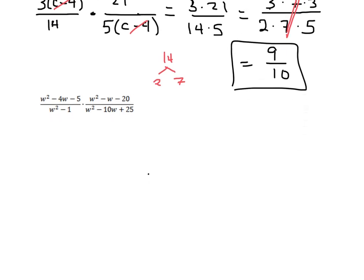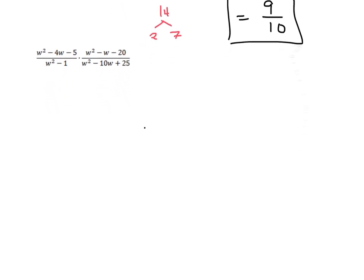Now let's go down here and take a look at another one — this one's a little bit more complicated. We have w squared minus 4w minus 5 over w squared minus 1, times w squared minus w minus 20 over w squared minus 10w plus 25. We're going to be doing short-key factoring here, short-key factoring here, short-key factoring here, and then this w squared minus 1 is a difference of squares.